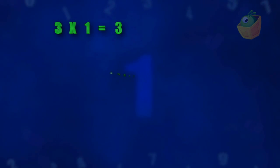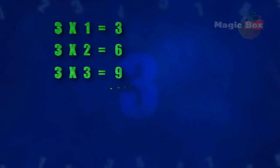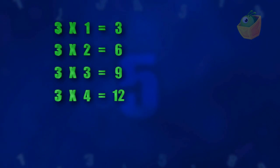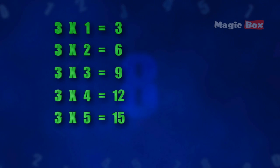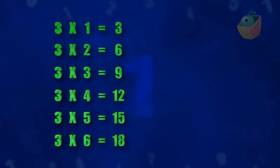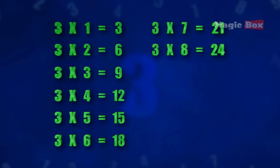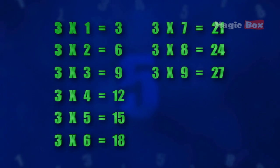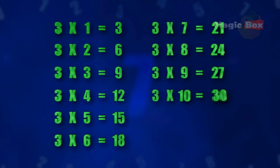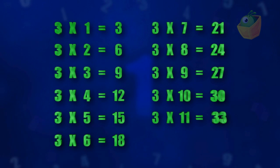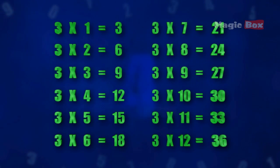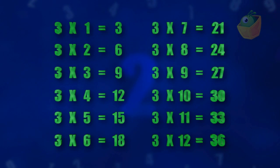3 1's are 3. 3 2's are 6. 3 3's are 9. 3 4's are 12. 3 5's are 15. 3 6's are 18. 3 7's are 21. 3 8's are 24. 3 9's are 27. 3 10's are 30. 3 11's are 33. 3 12's are 36.